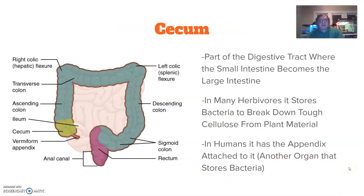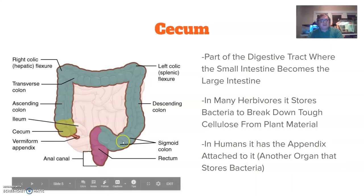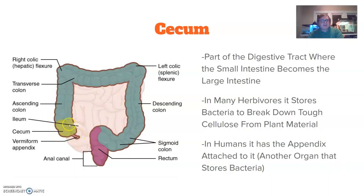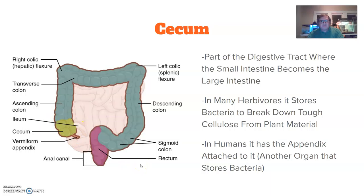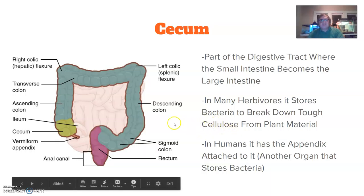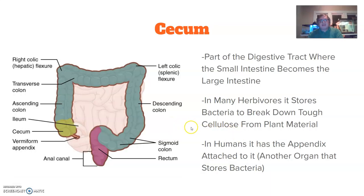Another structure related to digestion is the cecum. This is part of the digestive tract where the small intestine becomes the large intestine, shown in the highlighted portion of the diagram. In many herbivores, it stores bacteria to break down tough cellulose from plant material. We don't have as developed a cecum compared to herbivores, so we aren't able to break down large amounts of plant material. Cellulose is the fibrous material in things like celery that gives it shape and firmness.